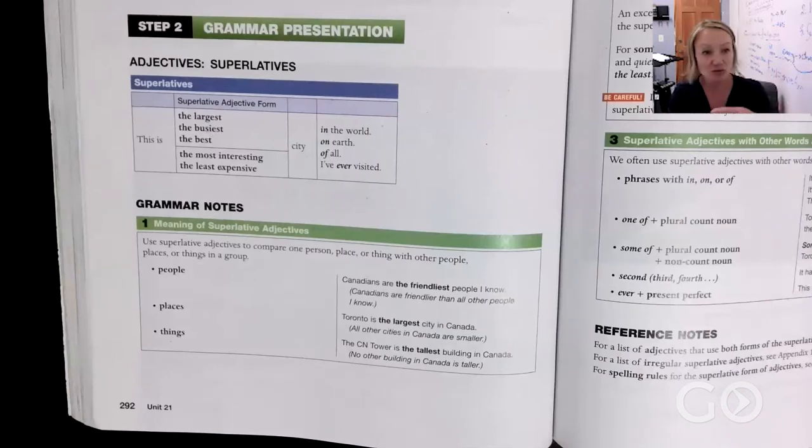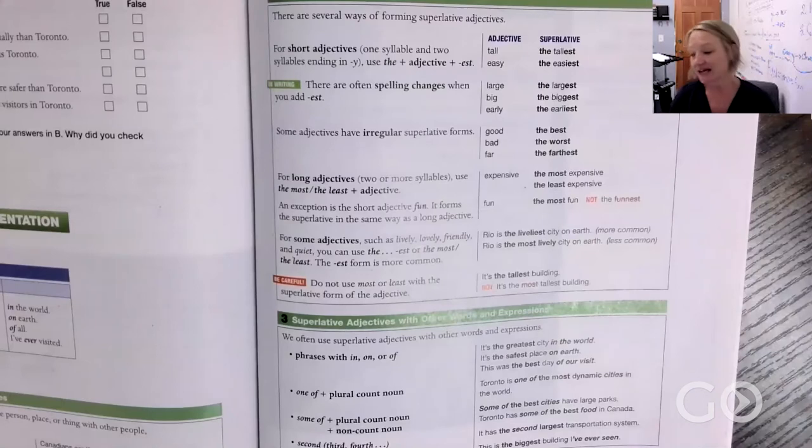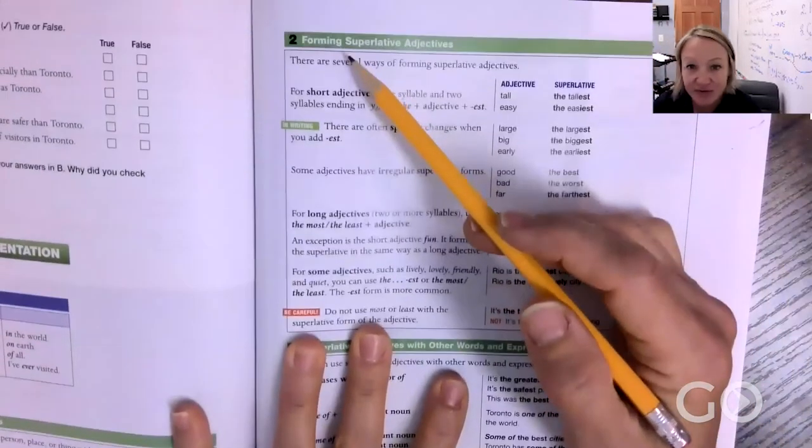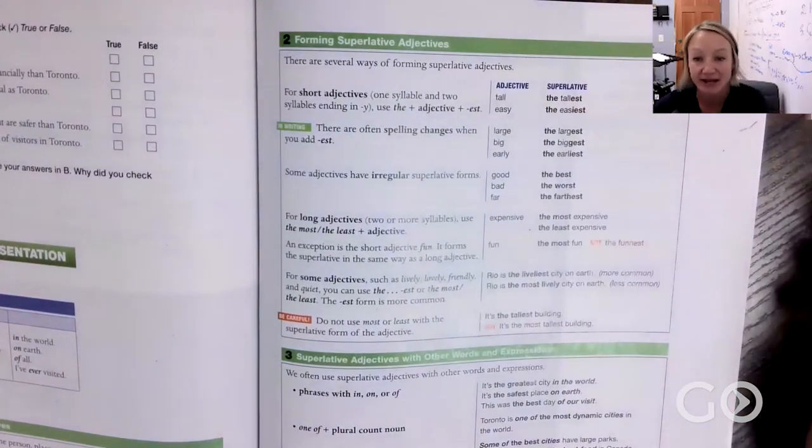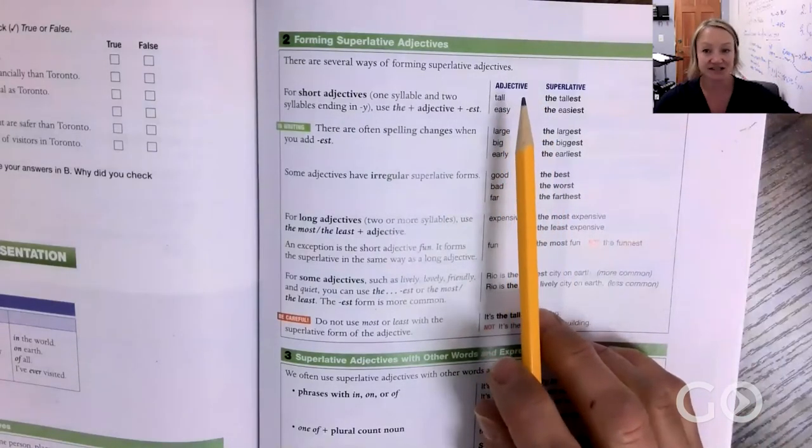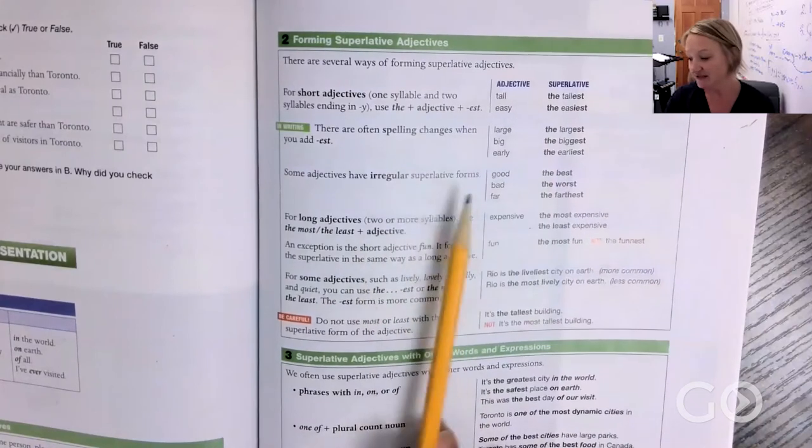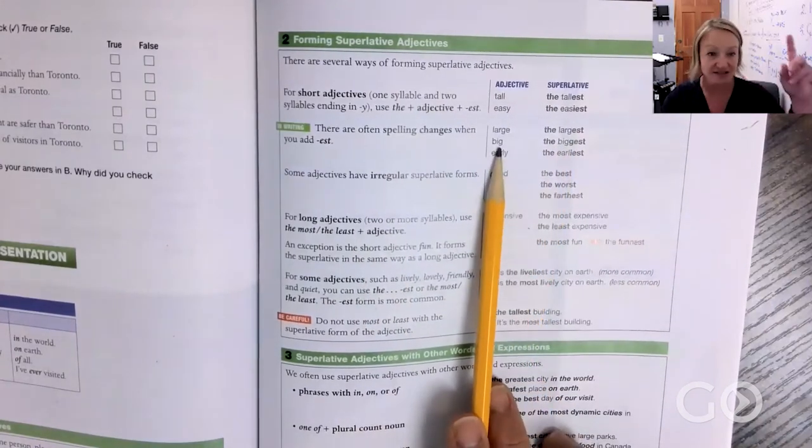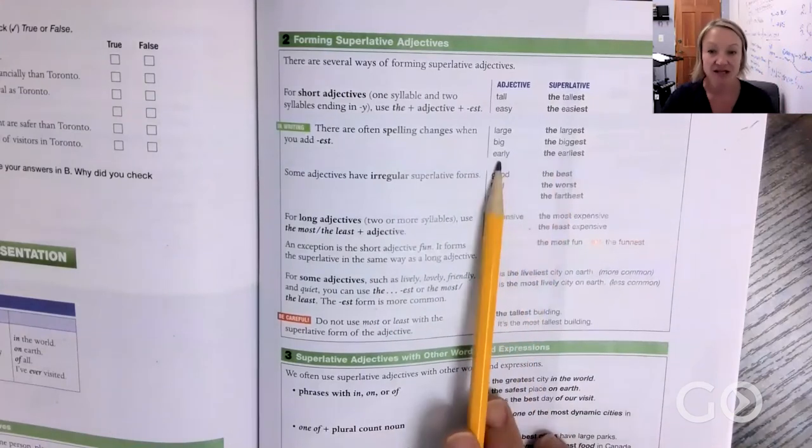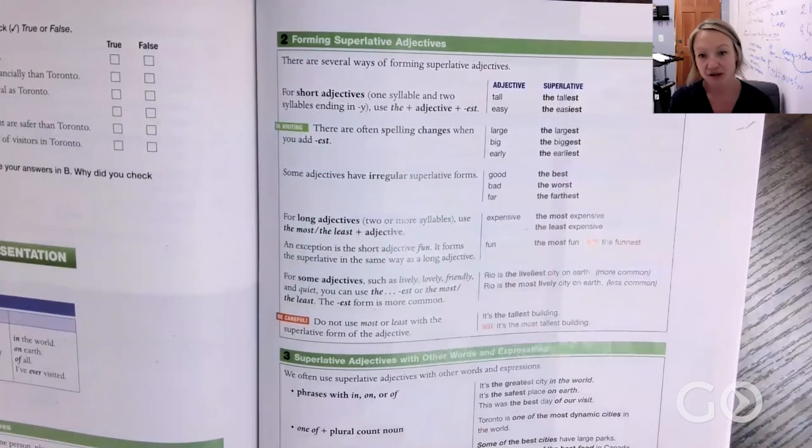Now we understand when to use this and we talked about how we use this. When is when we're talking about one person compared to many, and how is this is how we form the superlative adjectives. There are several ways to form these adjectives. You're going to take the adjective and say the tallest, the easiest. There are many spelling changes when you add -est: largest, you add -est; biggest, you double the g; earliest, you change the y to i and add -est. Some have irregular forms - good, bad, and far are the most common ones.